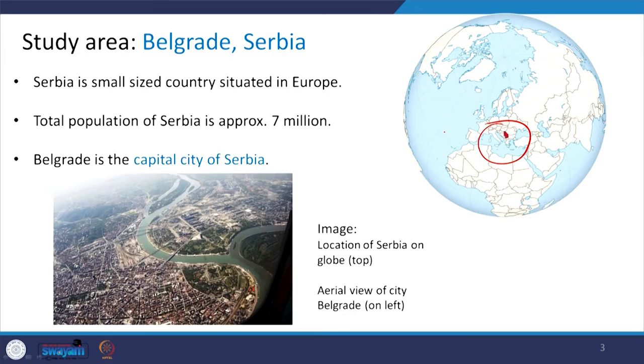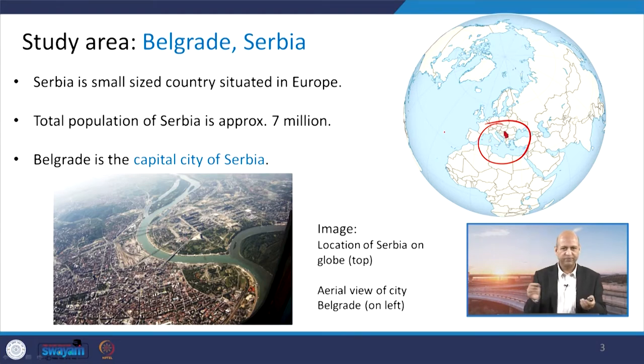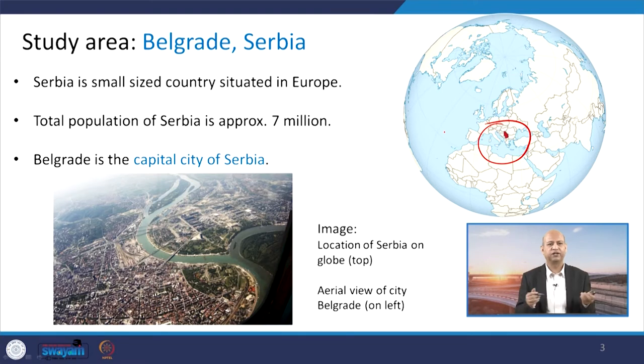The study area is basically Belgrade city of Serbia. This is a small-sized country of Europe — Serbia's population is only 7 million. We have several cities which have a population more than 7 million; in Delhi around 20 million people are living. So you can carve out 3 Serbias out of Delhi in terms of population. Belgrade is the capital city but still not very populated. It is situated at the confluence of two rivers, and you can see the aerial view and the location of the country on the global map.